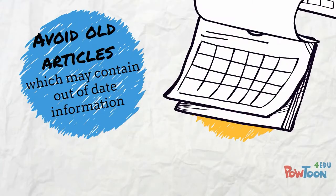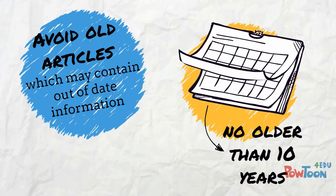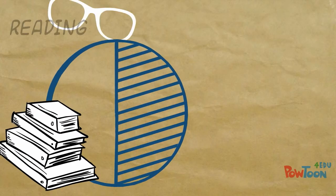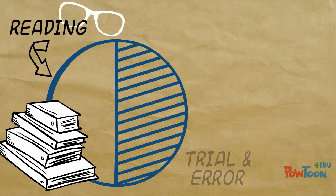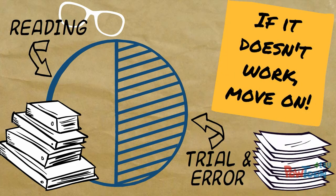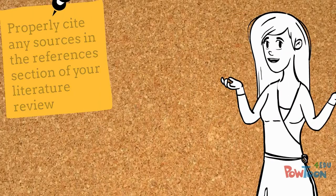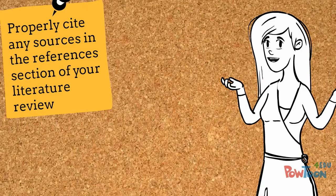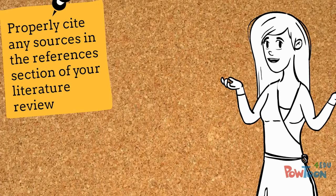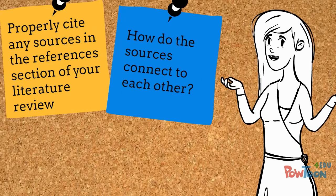Avoid old articles that are likely to contain out-of-date information. This process is part reading and part trial and error. If you read something that doesn't seem to apply, move on — don't try to make something work if it doesn't really relate. Make sure to properly cite any sources and save them so that you can find them easily later. Focus on what each source tells you and how they connect to each other.